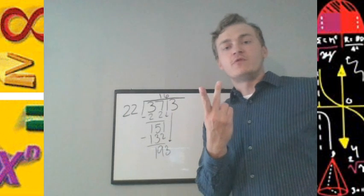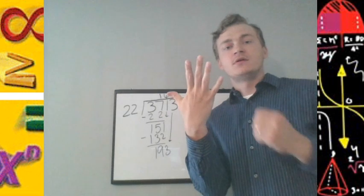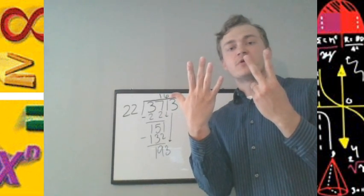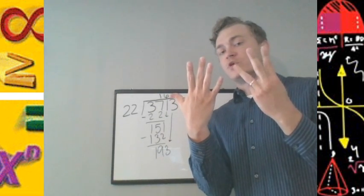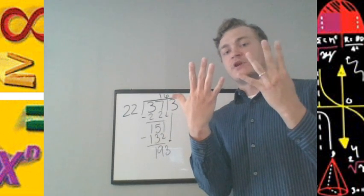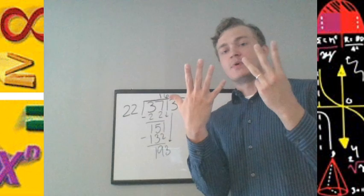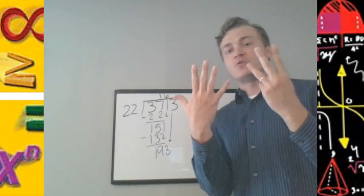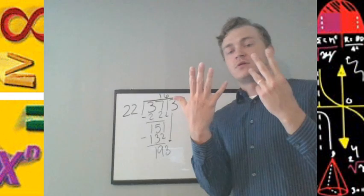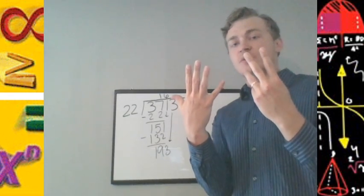22, 44, 66, 88, 110, 132, 154, 176, 198. Can't be 198, so we stop at 176. 193 divided by 22, we get 8, and there's going to be a remainder.